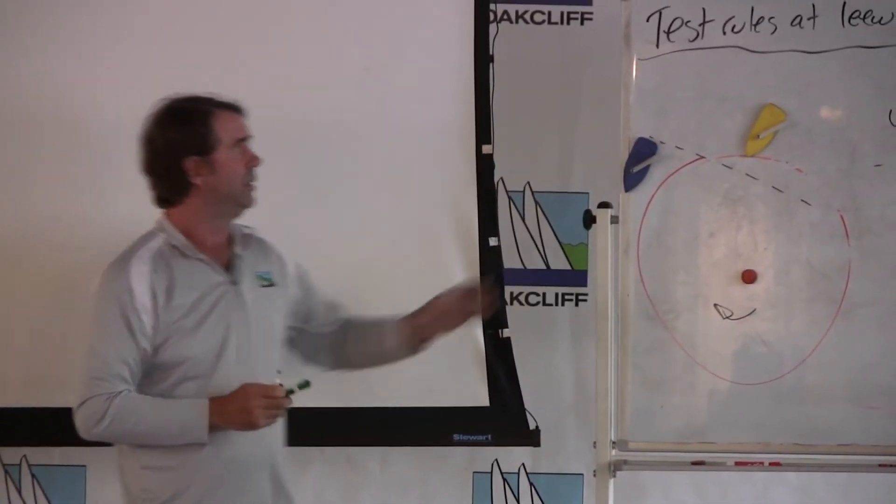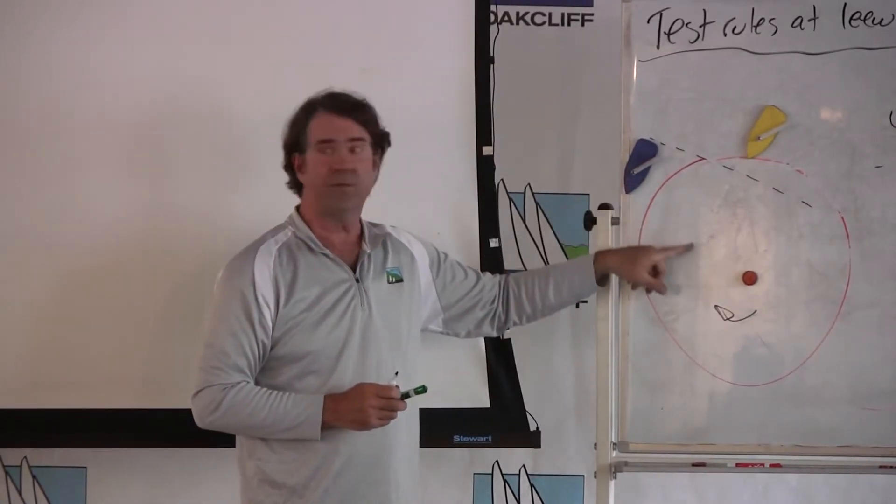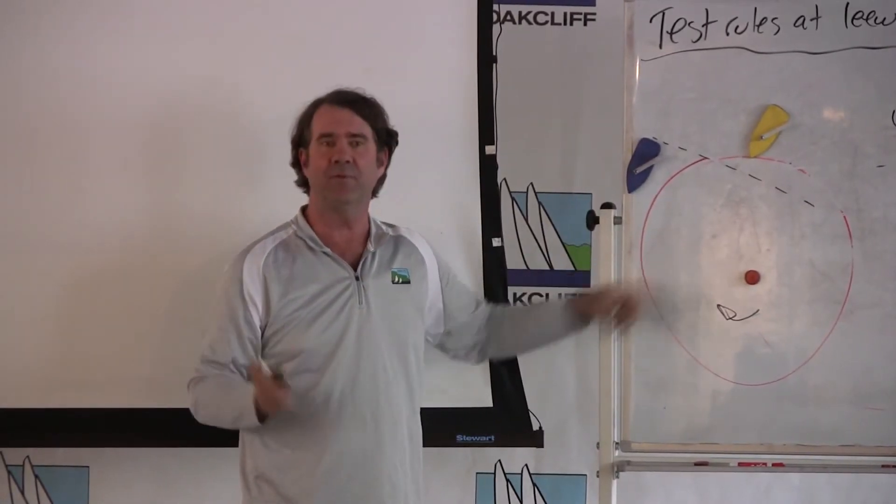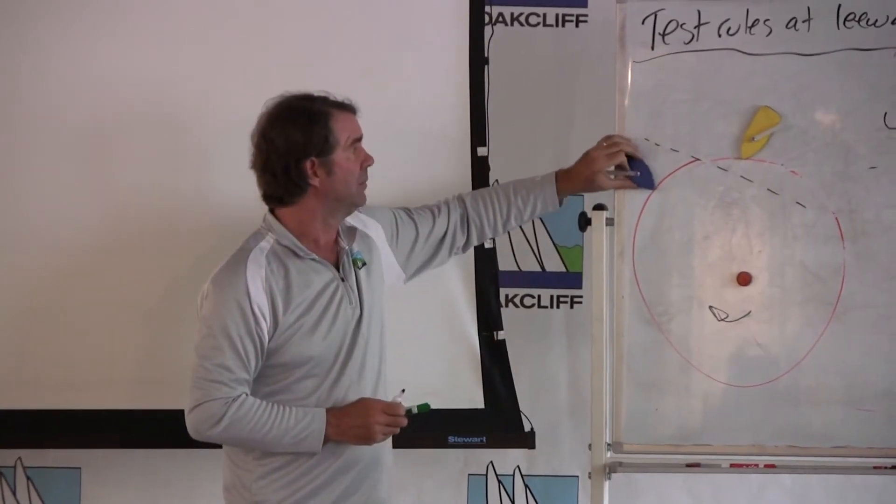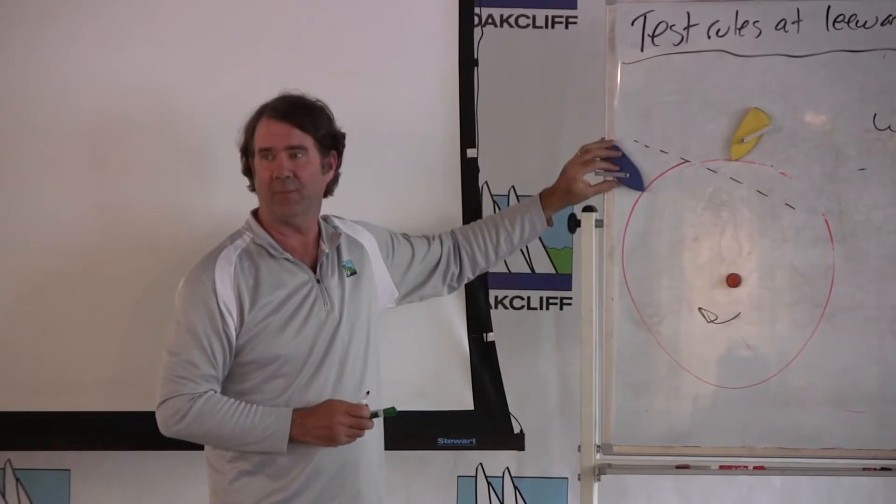Under the current rules, neither boat got to the zone clear ahead. Therefore, neither boat is entitled to mark room yet under the current rules. Once blue jibes under the current rules, the boats are clearly overlapped and the inside boat is entitled to room.